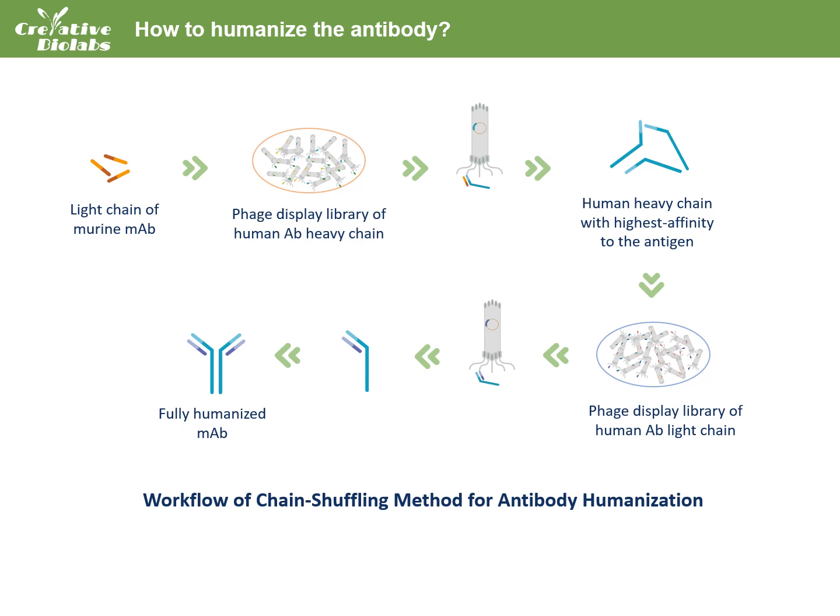Also, this sequential chain shuffling procedure can generate several versions of humanized antibodies with different sequences. The production of multiple humanized antibodies retaining the same epitope specificity is important in therapeutic regimens that call for long-term treatment with antibodies, in which anti-idiotypic responses might be avoided by administration of alternative antibodies.